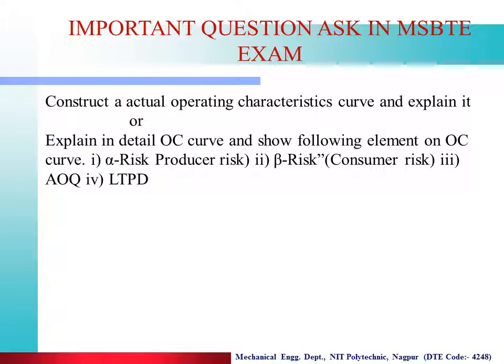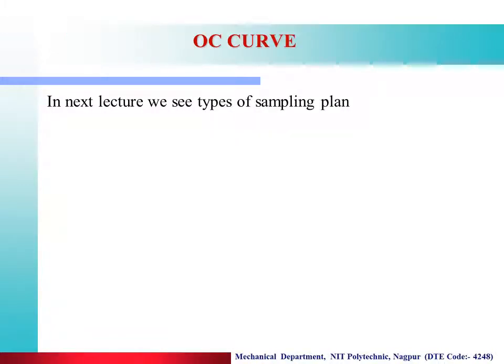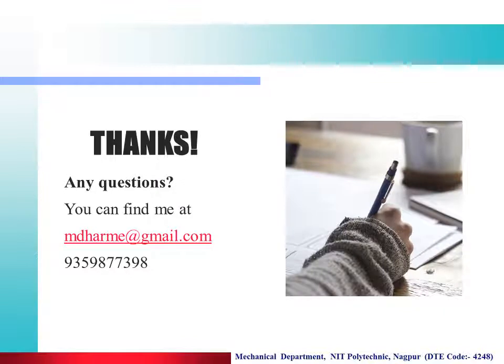Important questions asked in MSBTE exams: Construct an actual Operating Characteristics Curve and explain it in detail, showing the following elements on the OC curve — Alpha Risk (Producer Risk), Beta Risk (Consumer Risk), AOQ, AOQL, and LTPD. Various definitions are asked in the exam for 4 to 6 marks, depending on the depth of the question. In the next lecture, we will cover Types of Sampling Plans. Thanks — for any query, contact on this number.